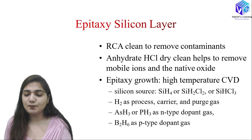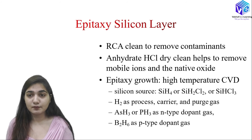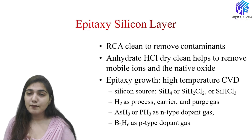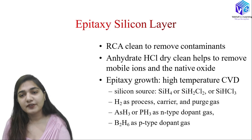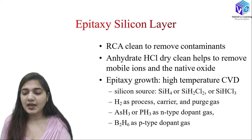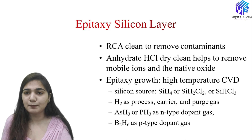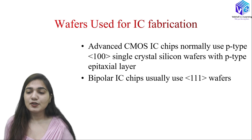Hydrogen is used as the process carrier and purge gas. For N-type doping of the epitaxial layer, we can use AsH₃ (arsine) or PH₃ (phosphine) as the N-type dopant gas. For P-type doping, we can use B₂H₆ (diborane) as the P-type dopant gas.